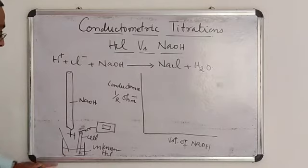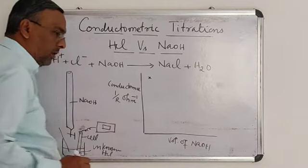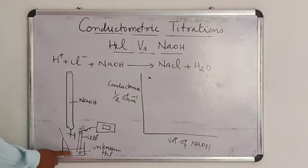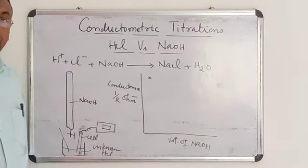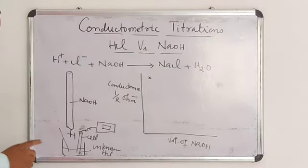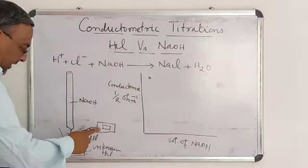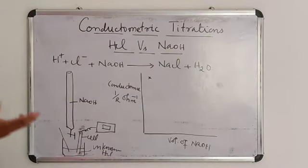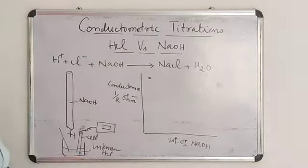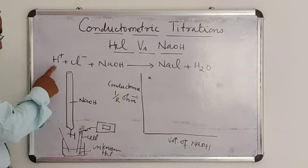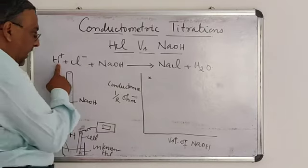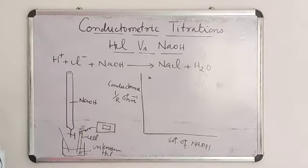When conductance is plotted against the volume of sodium hydroxide added, we see that initially the conductance is maximum. This is because H+ ions are very small in size and move very fast. The conductance of any ion mainly depends on its mobility or velocity. Initially the conductance is maximum due to the fast-moving H+ ions of hydrochloric acid present in the beaker. When sodium hydroxide is added from the burette, the fast-moving H+ ions are replaced by slow-moving OH⁻ ions of sodium hydroxide.